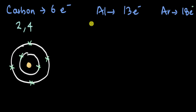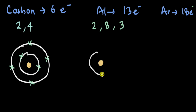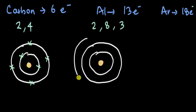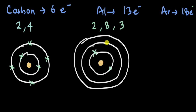For aluminium with 13 electrons: the first shell takes two, the second shell takes eight, and the remaining three occupy the third shell. That gives a configuration of 2, 8, 3. Drawn out, aluminium has a nucleus with a first shell of two electrons, a second shell of eight electrons, and a third shell of three electrons.